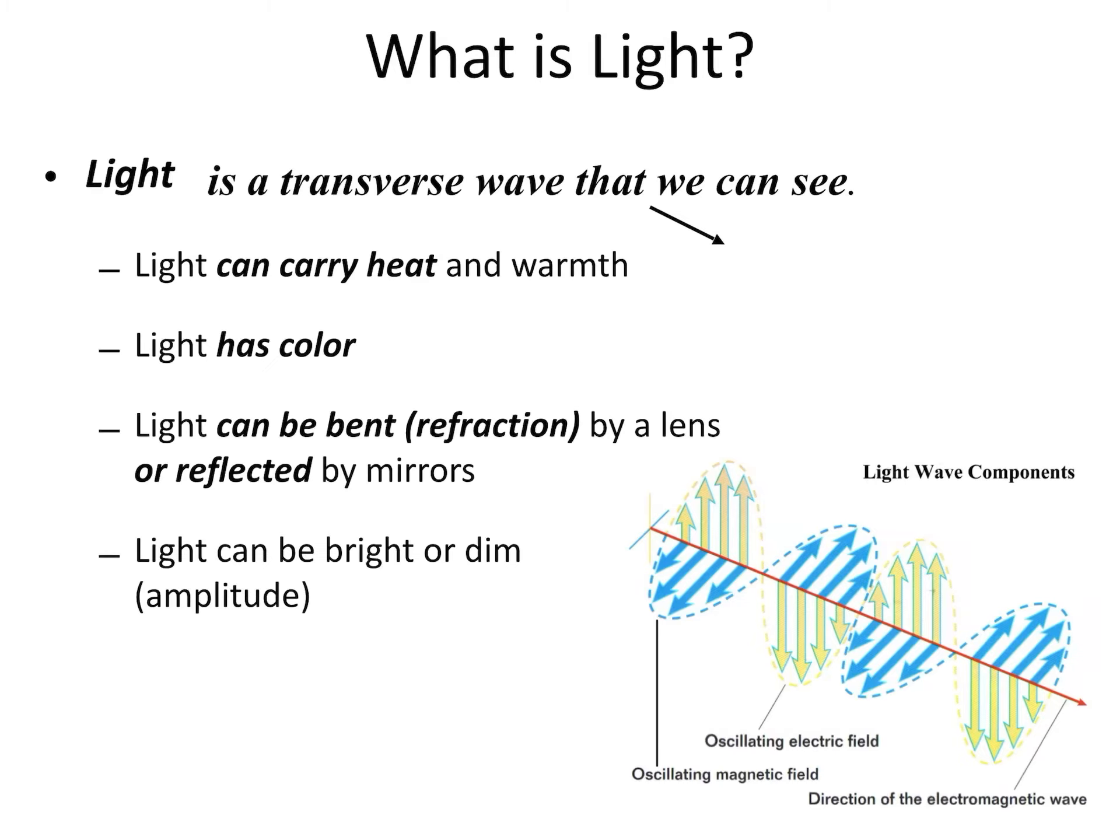When we're talking about light, you probably know from personal experience that light is a form of energy, light carries heat, light has color. We have already talked about some of the different types of wave behaviors: reflection, refraction, and diffraction with the D. Light can experience all of those different types of behaviors.